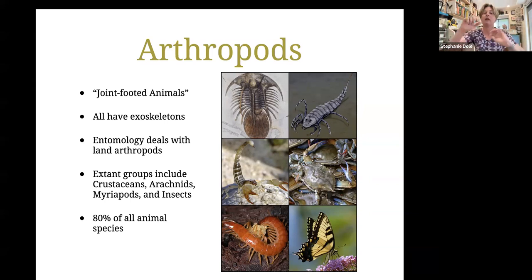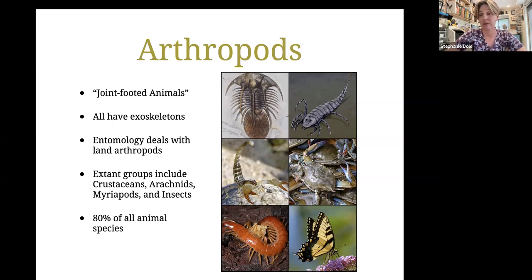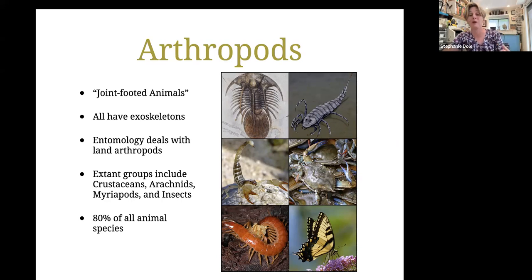Arthropods have skeletons made of plates of armor with flexible parts in between, allowing them to move. Entomology technically means the study of insects, but actually deals with all terrestrial arthropods — any arthropods that live on land. There's a lot of arthropod diversity in the ocean too, including crustaceans and chelicerates like horseshoe crabs. On land, I end up teaching about crustaceans like isopods and roly-polies, arachnids like spiders and scorpions, myriapods like centipedes and millipedes, and of course all true insects.